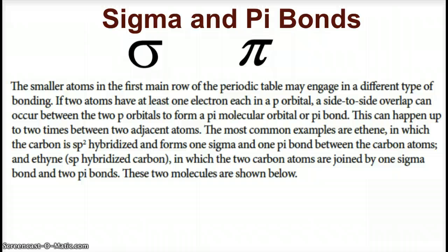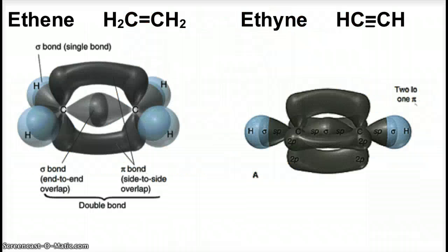This is a little excerpt from the College Board talking about sigma and pi bonds. The smaller atoms in the first main row of the periodic table may engage in a different type of bonding. If two atoms have at least one electron in a p orbital, a side-to-side overlap can occur and we conform a pi molecular orbital or pi bond. The common examples are ethene and ethyne. Ethene is two carbons linked together with a double bond, and hydrogens filling up the rest. The first bond in the double bond is sigma, the second bond is the pi bond. The overlap is above and below the bond.